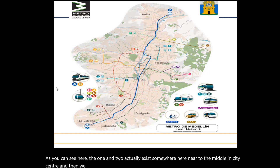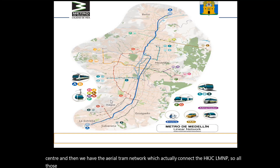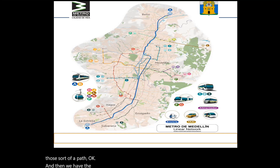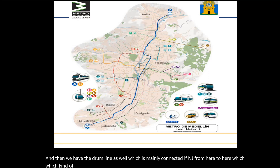Then we have the aerial tram network, which actually connects H, K, J, L, M, N, P — all those sorts of paths. And then we have the tram line as well, which is mainly connected at F and J, crossing the Medellín city in the longitudinal way.